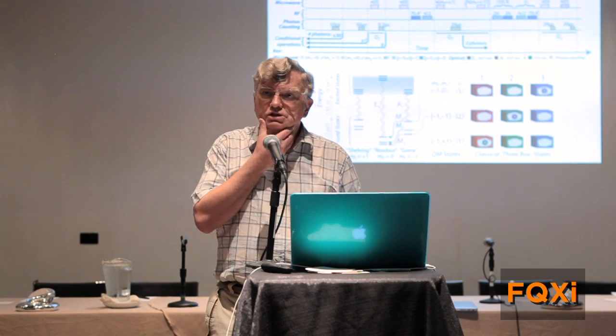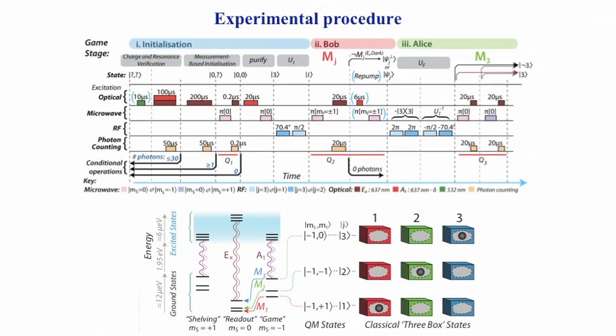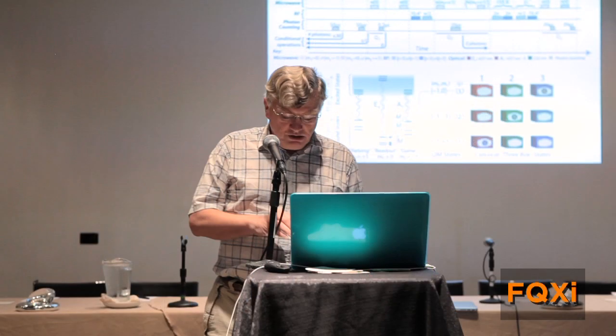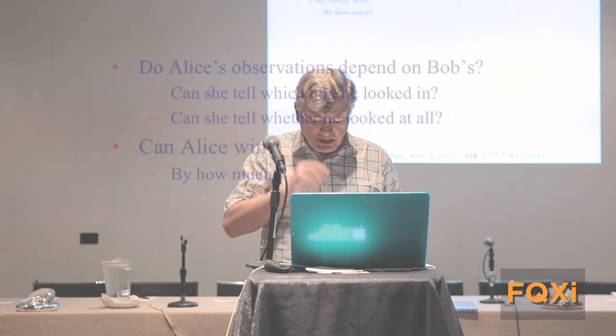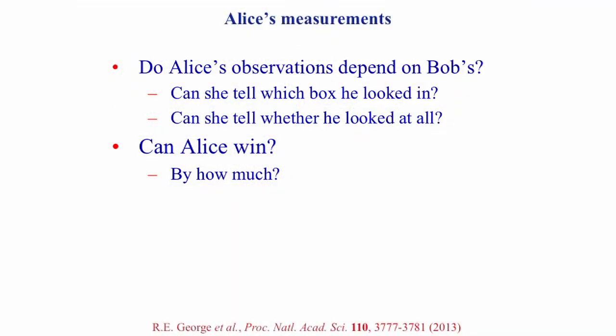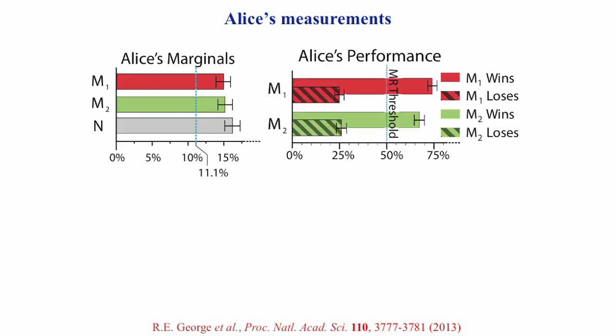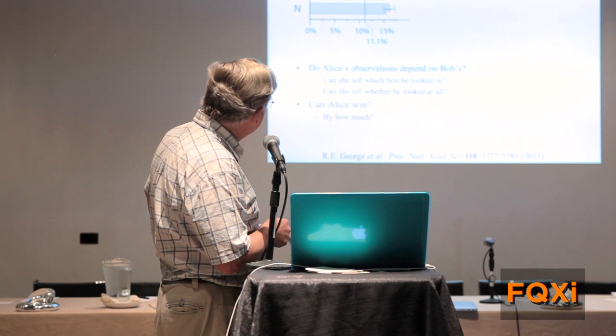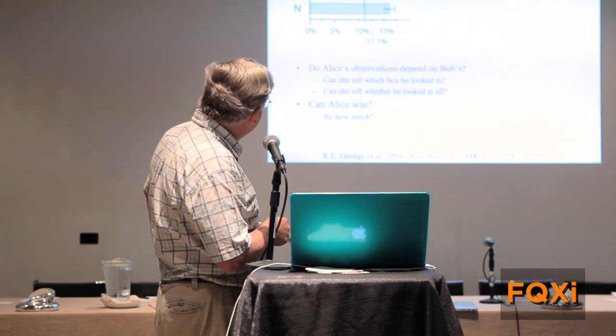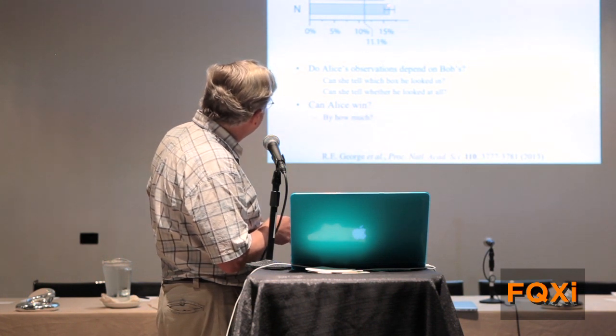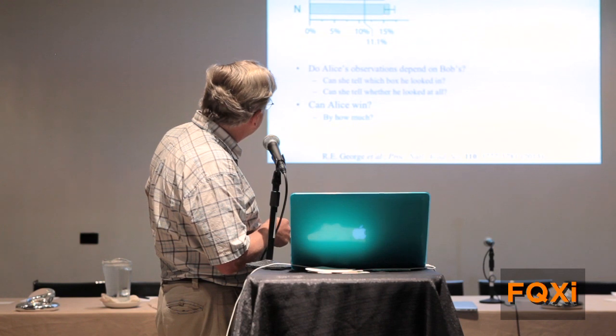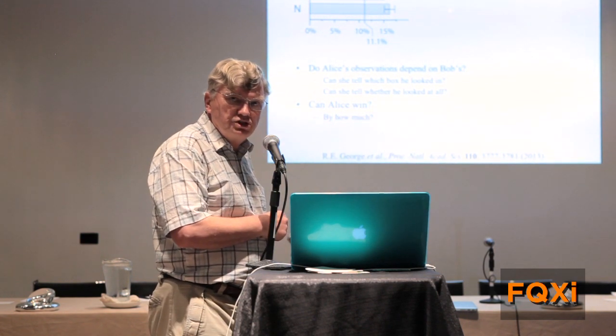We implemented this using negatively charged nitrogen vacancy centers in Diamond. It was a real experiment with real pulse sequences. Here are the results. Alice can do a little check, first of all, to check that she really can't detect what Bob is doing. When Bob looked in box one, does she see anything? When Bob looked in box two, and when Bob didn't do anything at all. Theory says she should see something a ninth of the time. Actually, it's a bit more than that, because this is a real experiment with real errors. But this is good enough for the test that we want to do.